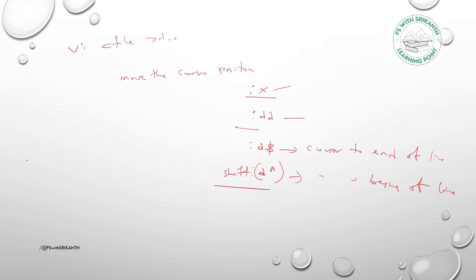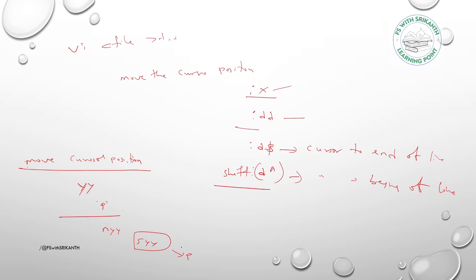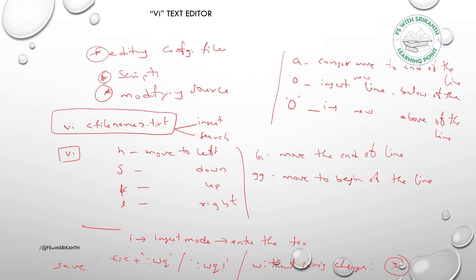To copy content, move the cursor to the desired position and press 'yy' to yank (copy) the entire line. Press 'p' to paste it. To copy multiple lines — for example five lines — press '5yy' and then 'p' to paste. This is how copy-paste works in vi editor.